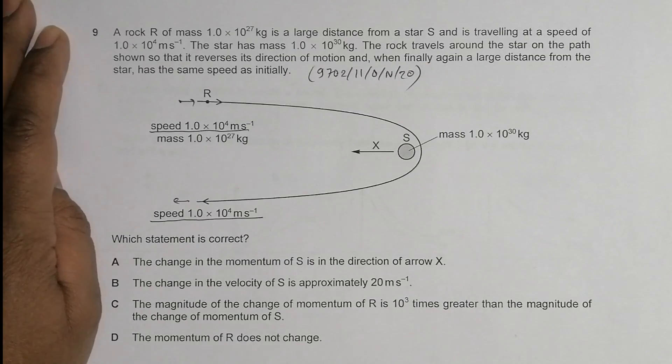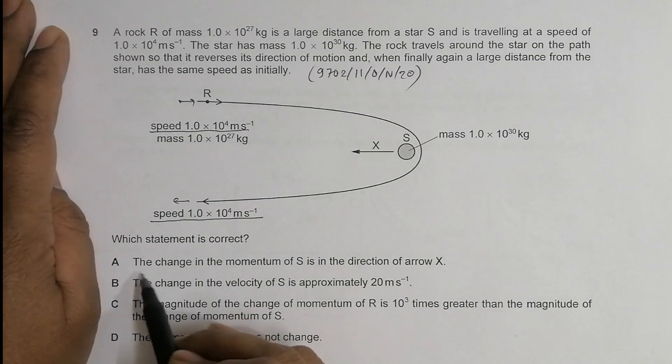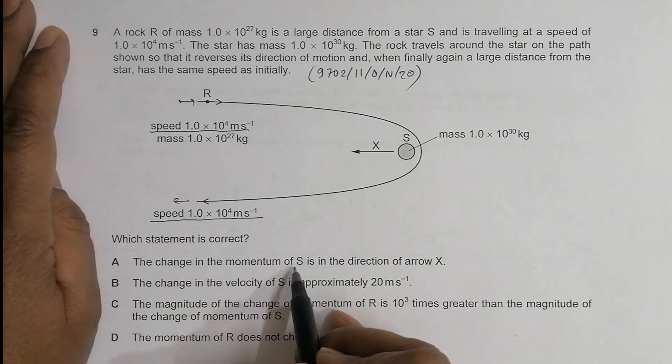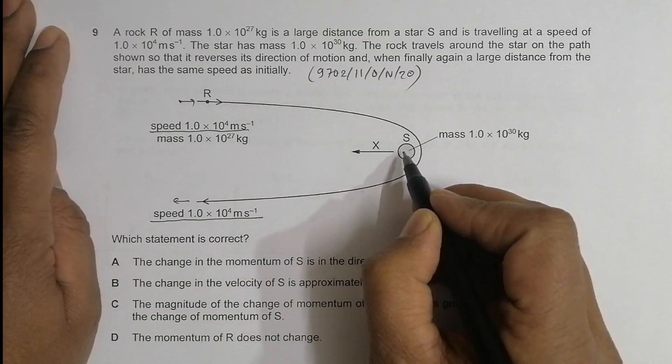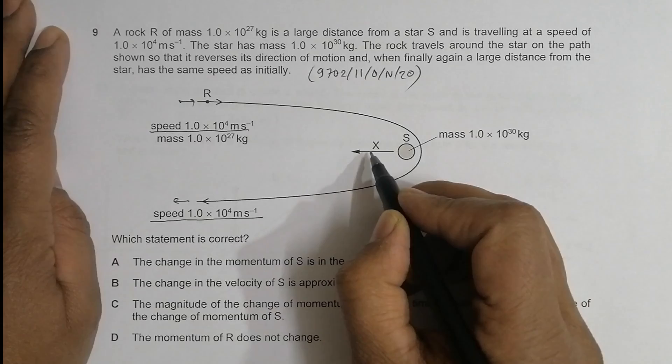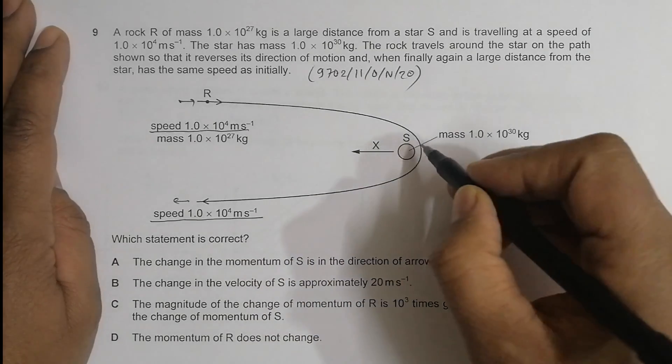Which statement is correct? The first option says the change in momentum of S is in the direction of arrow X. Let's see what is true.